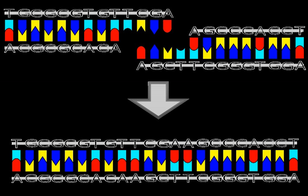The higher the ligase concentration, the faster the rate of ligation. Blunt end ligation is much less efficient than sticky end ligation, so a higher concentration of ligase is used in blunt end ligations. High DNA ligase concentration may be used in conjunction with PEG for a faster ligation, and they are the components often found in commercial kits designed for rapid ligation.